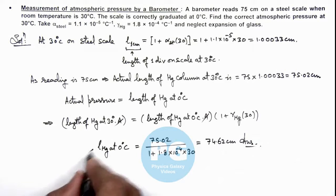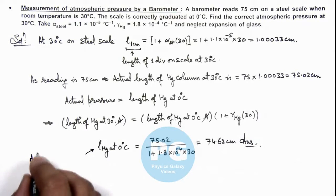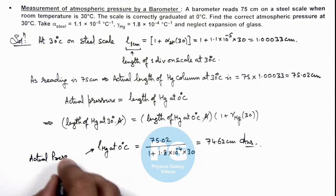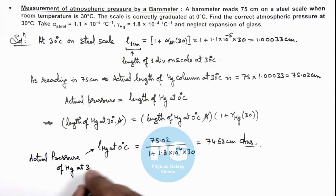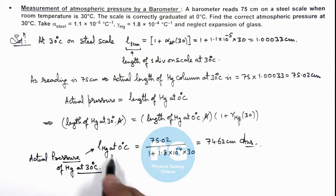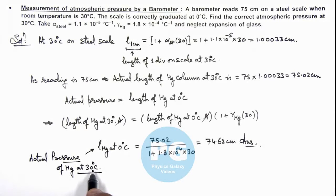You must not confuse this value — 74.62 cm is the actual pressure of mercury at 30 degree centigrade, for which we are calculating the length at zero degree, because at 30 degree centigrade the density of mercury is less, that's why the length will be relatively different.